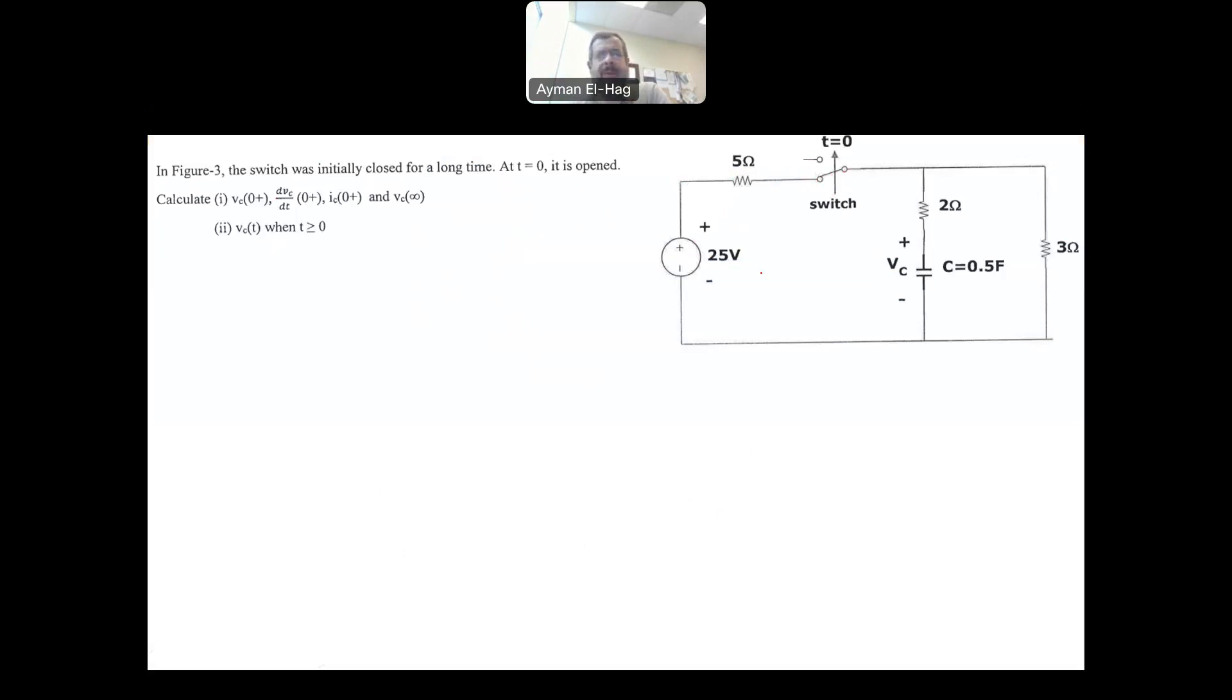Calculate the voltage across the capacitor at zero plus. The meaning of the word zero plus is the moment when you close the switch, at that moment when the switch is closed. Then dV by dt at the same moment, IC at the same moment, and finally, the voltage across the capacitor as t goes to infinity. Then find VC as a function of time from t equal to zero onwards.